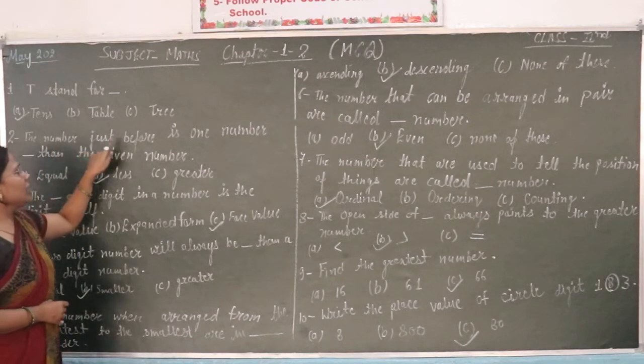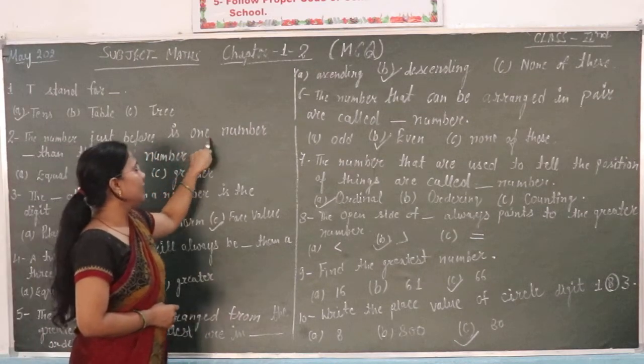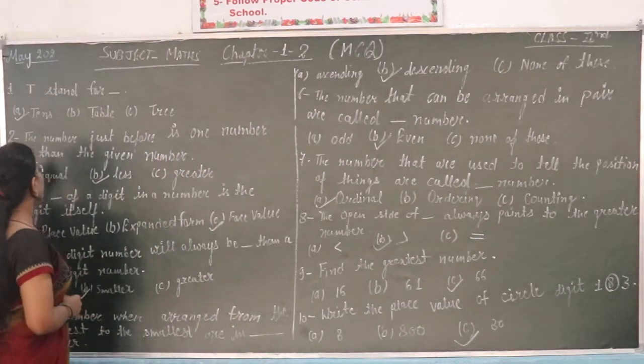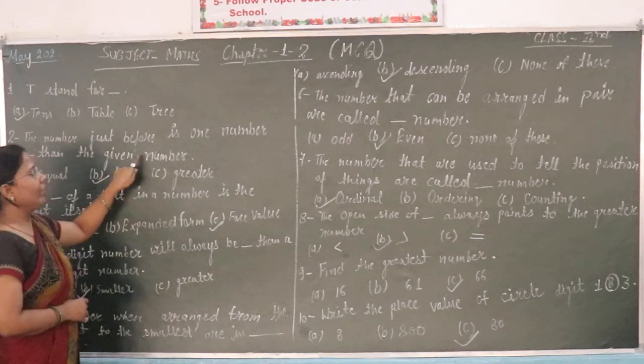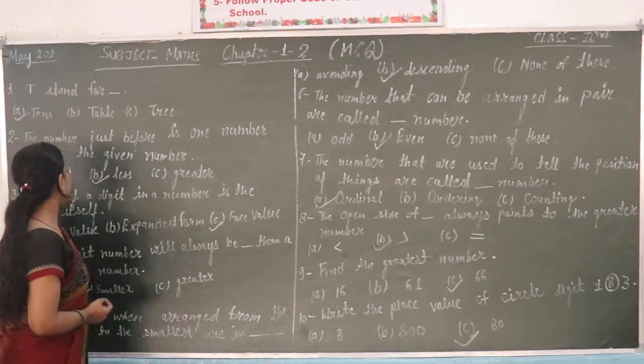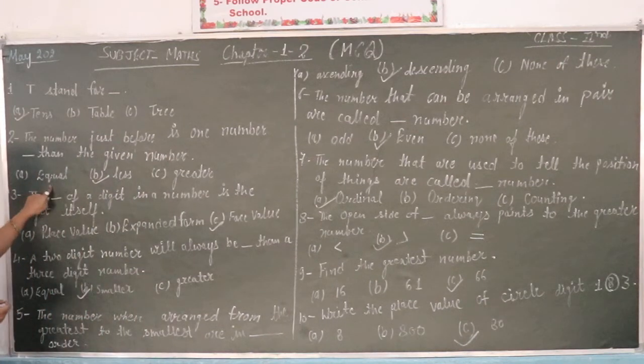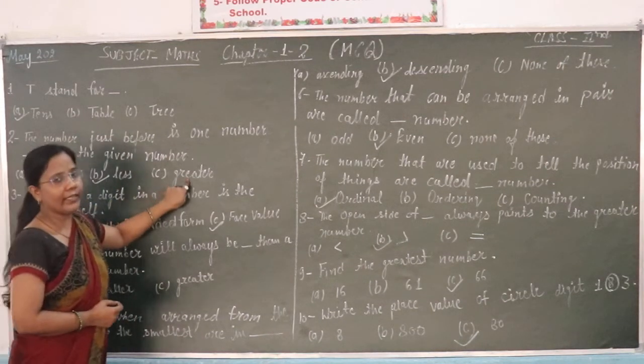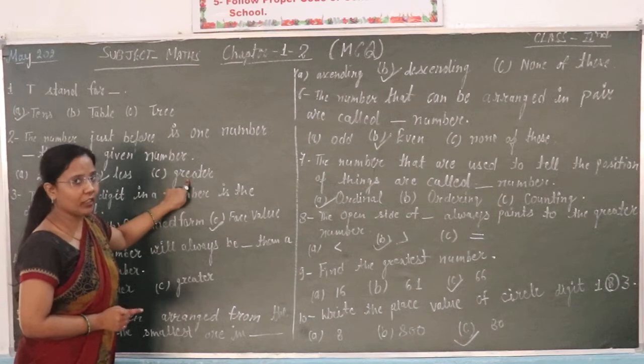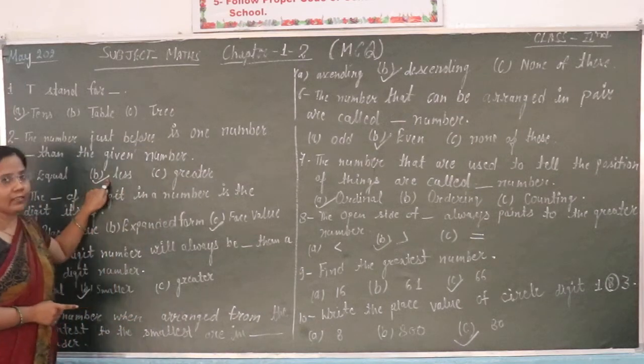The number just before a given number? Options: 10, table, less, greater. The answer is less.